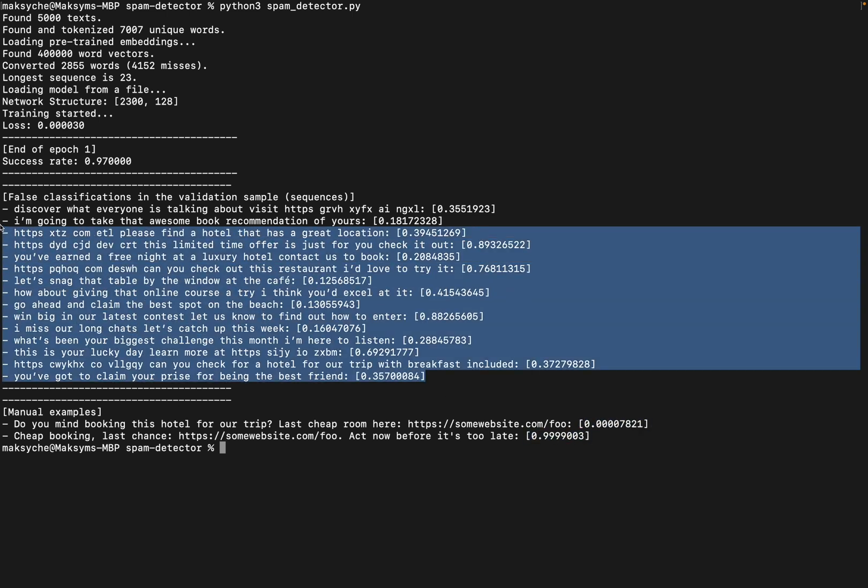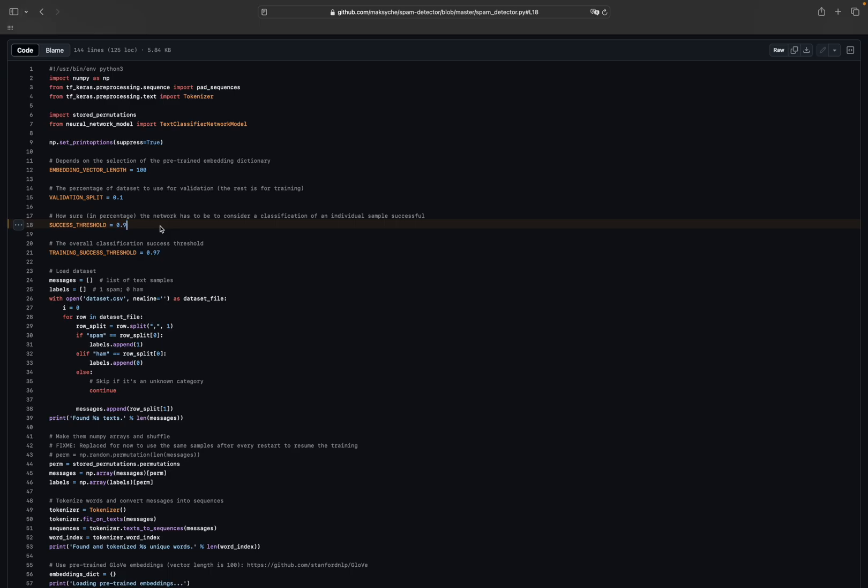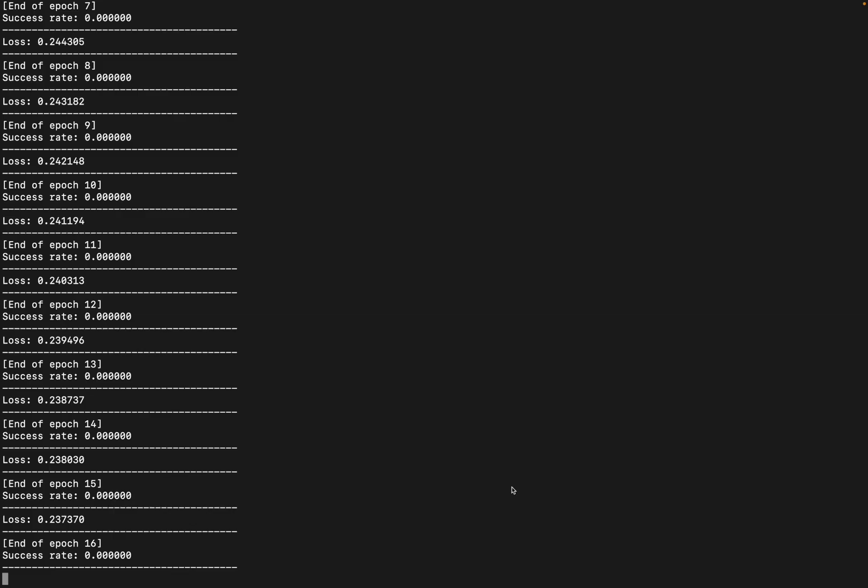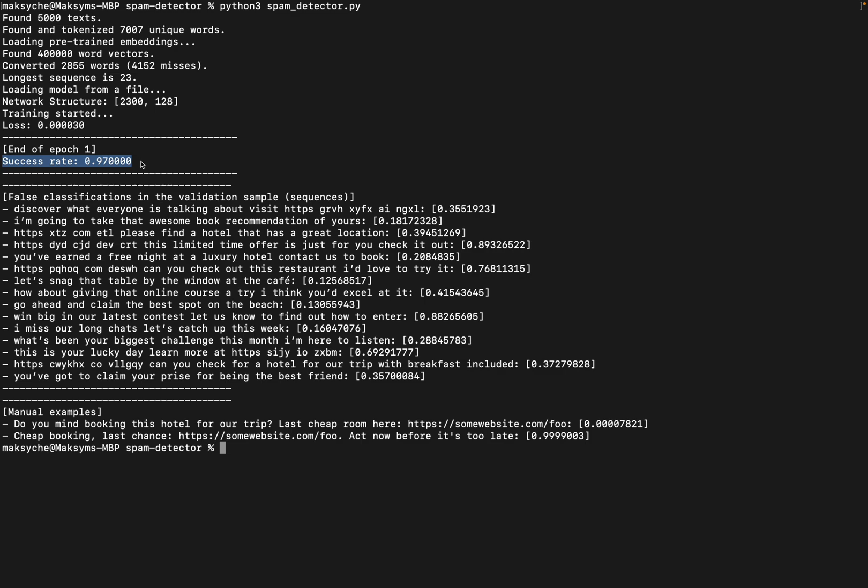If you look through the classification mistakes on a validation set, you notice that there are no false negatives or false positives. The network is just not sure enough to classify some examples. If you play with the threshold of what to consider a successful classification and maybe train the network a bit longer, you may get even better results.